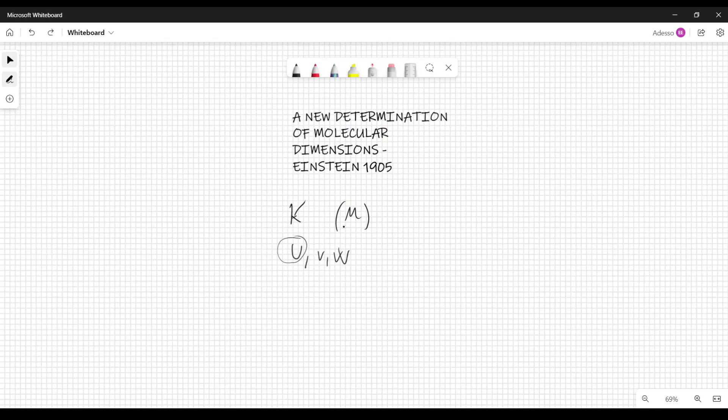These components of the velocity are functions of the coordinates x, y, z and also time. At an arbitrary point, let's say x0, y0, z0, the functions u, v, w can be developed as functions of x minus x0, y minus y0, and z minus z0 according to the Taylor series expansion.